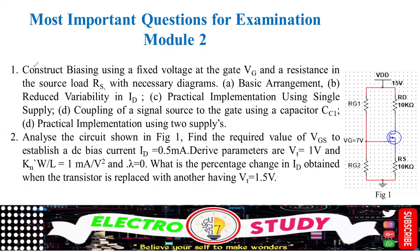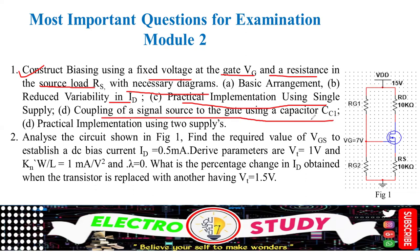Question number one: construct biasing using fixed voltage at a gate VG and resistance in the source load RS with necessary diagrams. This covers the basic arrangement, reduced variability in drain current ID, practical implementation using a single supply, coupling of a single source to gate using coupling capacitors CC1, and a practical implementation using two supplies. It is an analytical type question.